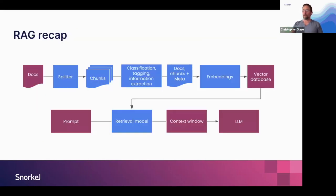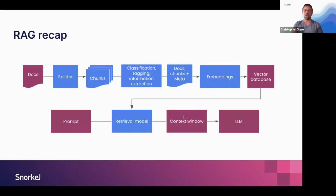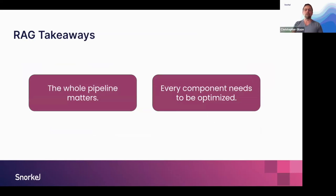To sum up: I've gone over the basic pieces of this pipeline — chunking optimally with our proprietary algorithm, classification and information extraction to create metadata used both for training embedding models and directly in retrieval, the retrieval model itself and how it uses embeddings to compute relevance scores, and how we leverage those scores to feed the right signal to the large language model context window. The whole pipeline matters, and you want to optimize each piece. You can get dramatic improvements in your RAG system's performance if you focus on the entire pipeline as a system, not just the machine learning-based parts like the embedding model.